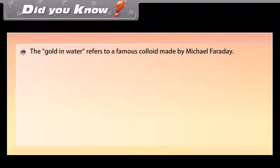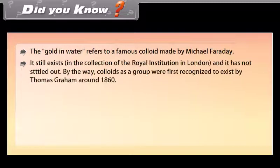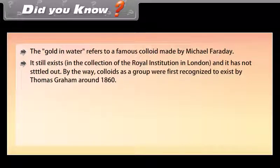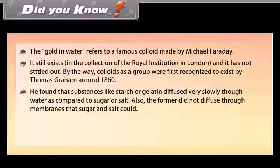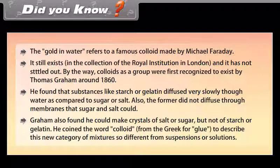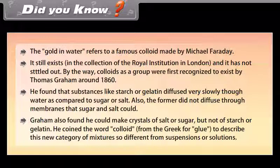Did you know? The 'gold in water' refers to a famous colloid made by Michael Faraday. It still exists in the collection of the Royal Institution in London and has not settled out. Colloids as a group were first recognized by Thomas Graham around 1860. He found that substances like starch or gelatin diffused very slowly in water compared to sugar or salt, and did not diffuse through membranes that sugar and salt could. Graham also found he could make crystals of salt or sugar but not of starch or gelatin. He coined the word 'colloid' from the Greek for glue to describe this new category of mixtures, so different from suspensions or solutions.